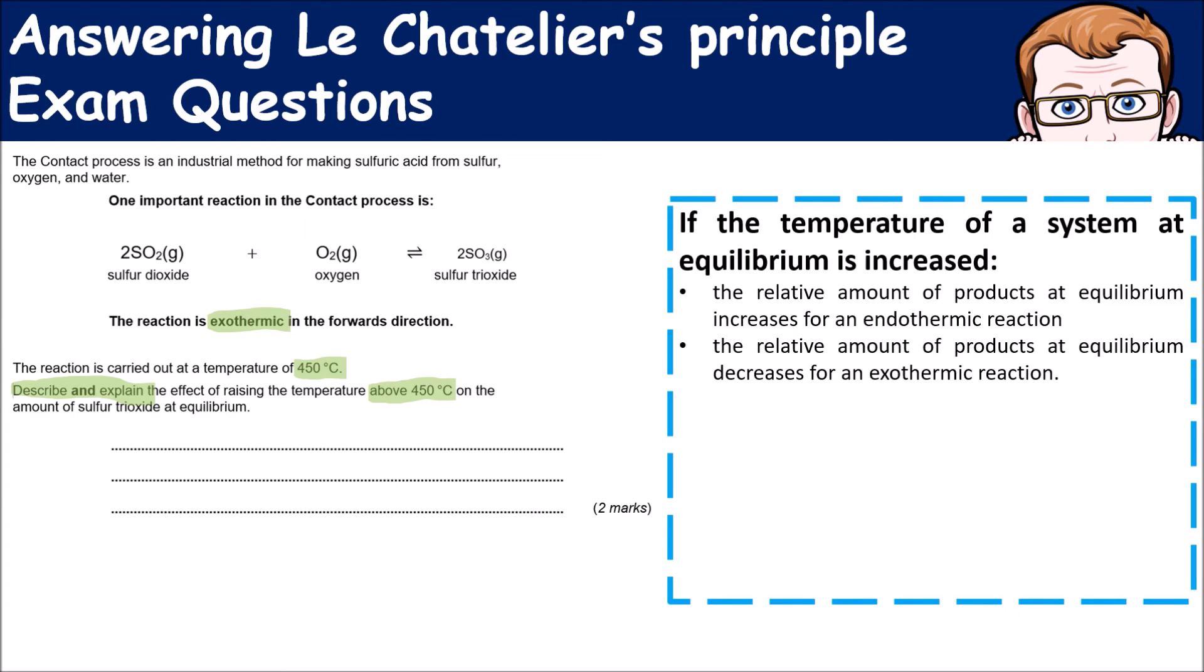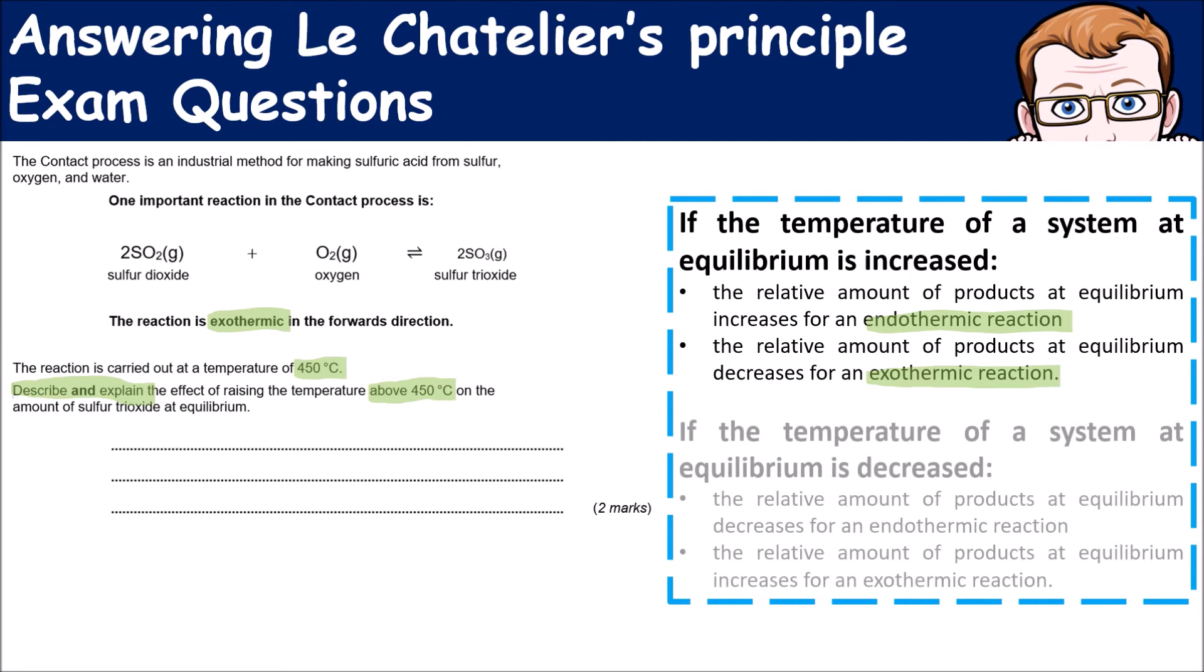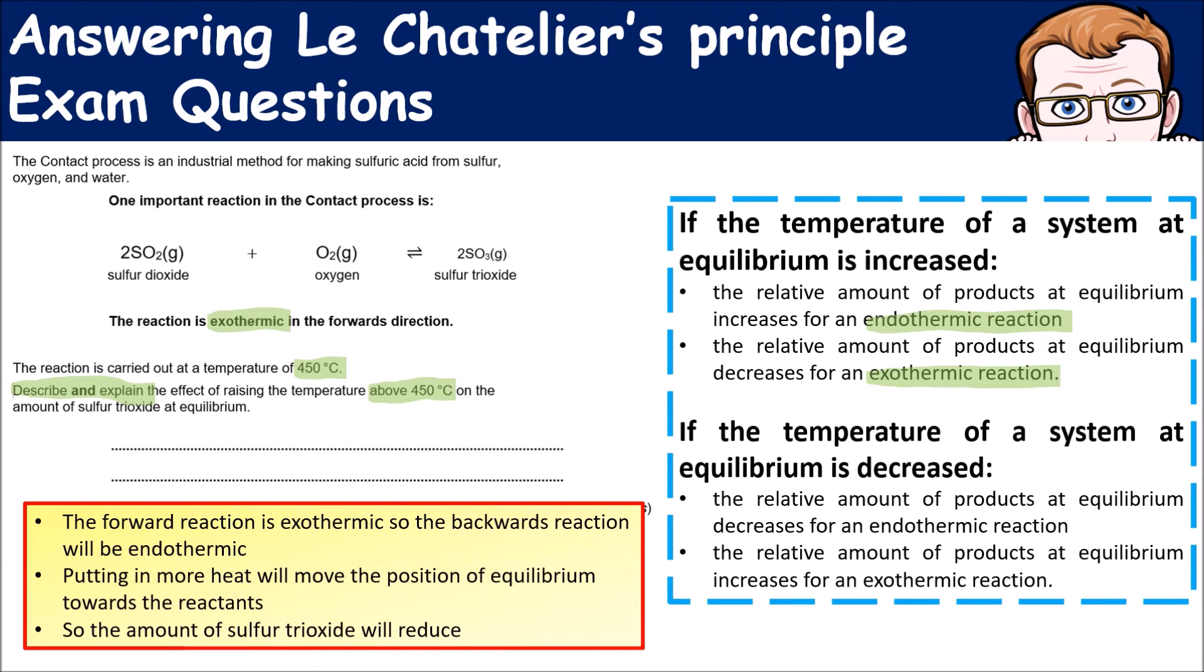If the temperature of a system at equilibrium is increased, the relative amount of products at equilibrium will increase in the endothermic reaction, which in this case is the backwards reaction. So the relative amount of products at equilibrium would decrease in the exothermic reaction. Remember that this is an exothermic reaction. Counter to that, if we decrease the temperature then it would go in the opposite direction. The key things you need to talk about is the fact that the forward reaction is exothermic, so therefore the backward reaction will be endothermic. Putting in more heat or increasing the temperature will change the position of equilibrium back towards the reactants, so the amount of sulfur trioxide would reduce in this case.